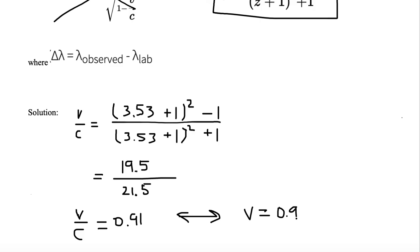So we've got v over c equal to 0.91, which is the same thing as saying v is equal to 0.91c. All I did was multiply both sides of the equation by c. This c drops out with this c. So we're left with v is equal to 0.91c.